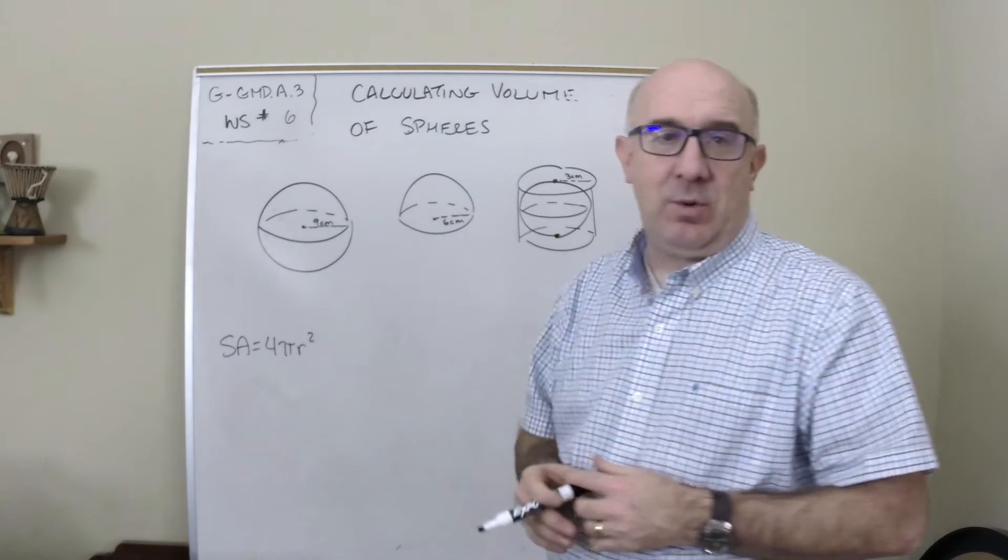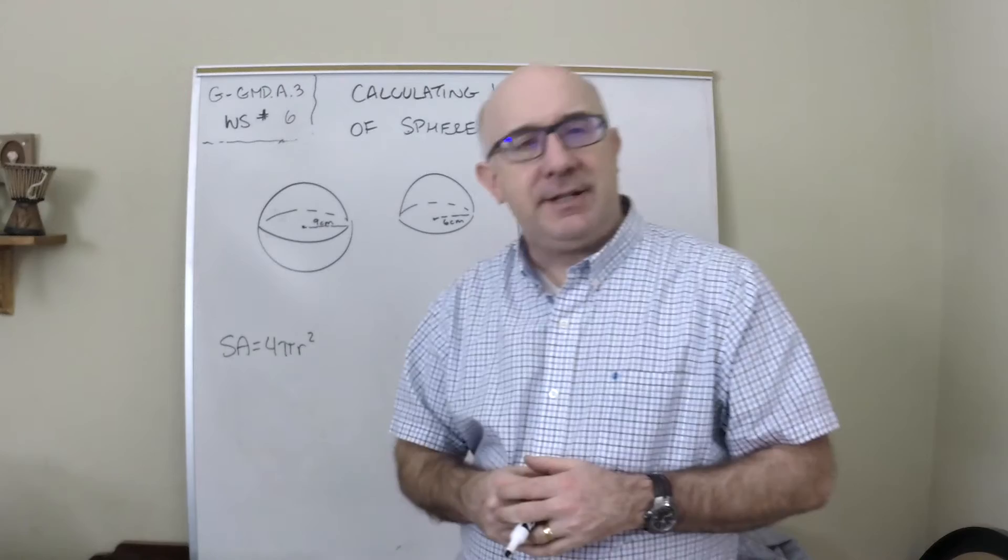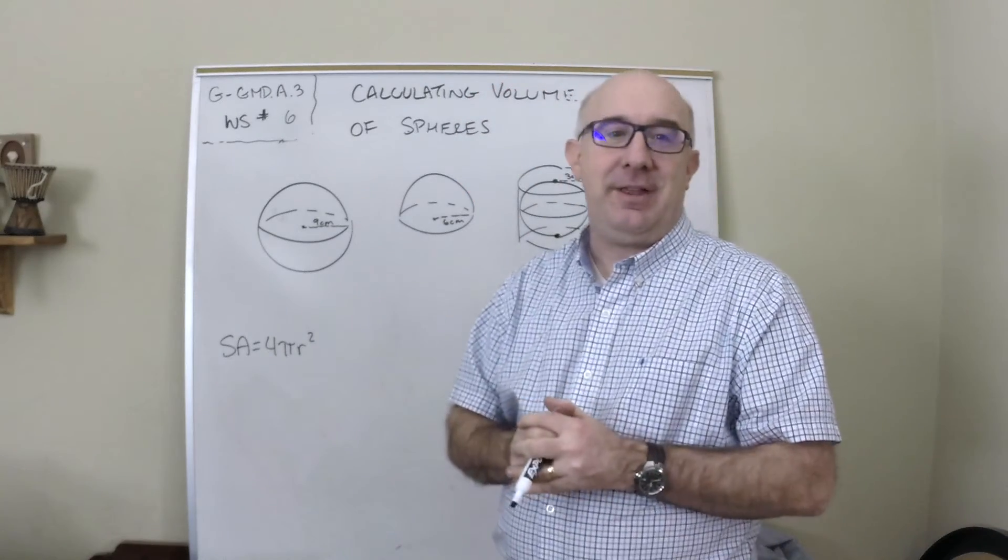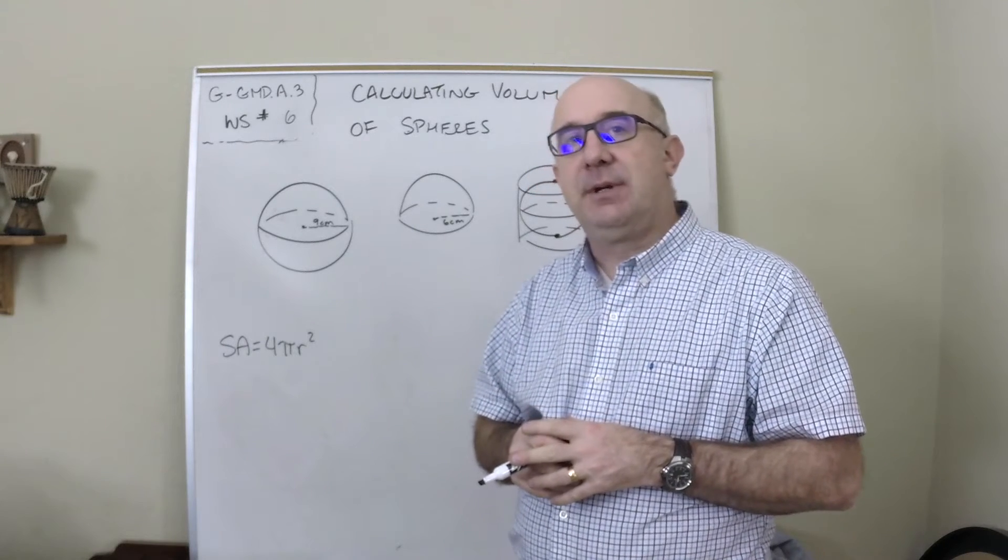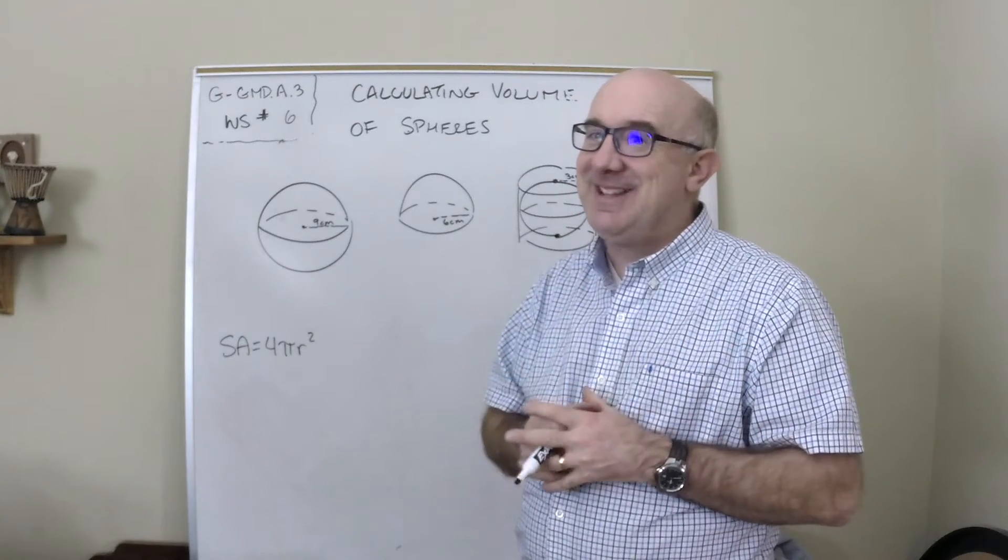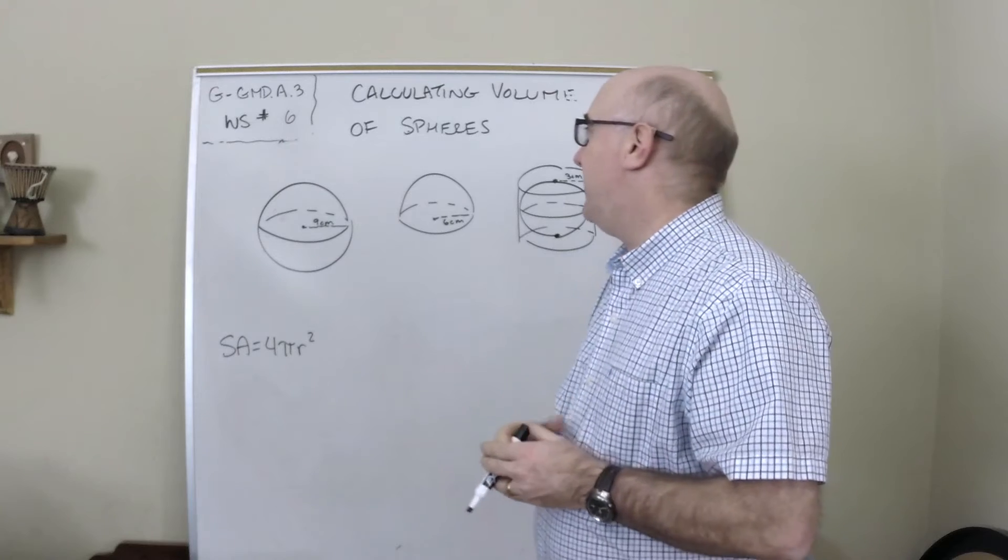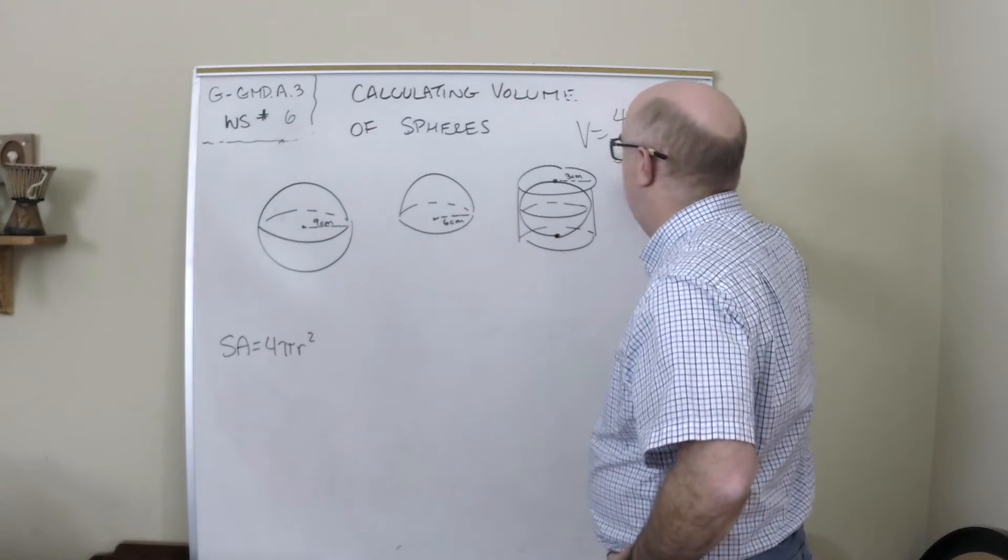Alright, let's talk about worksheet 6, all about spheres. Now this formula is not a trivial one to come up with. There are some geometric explanations to this, and there is a calculus approach to find this that's pretty simple. The volume of a sphere is four-thirds πr³.